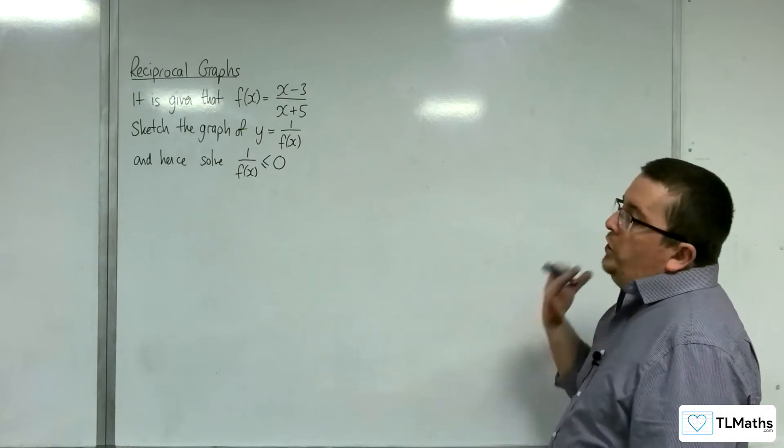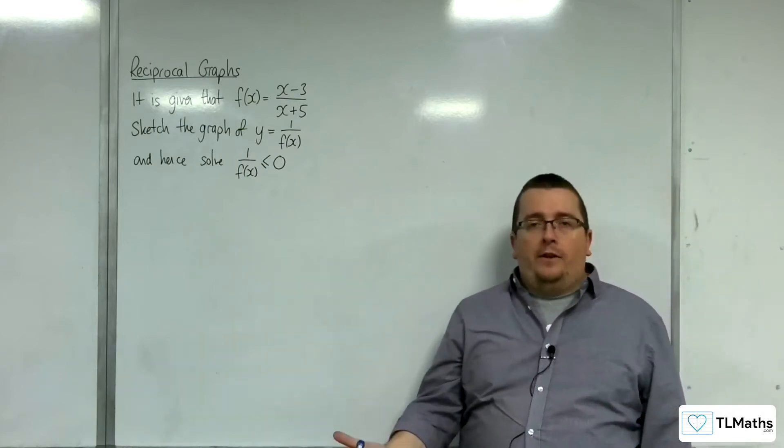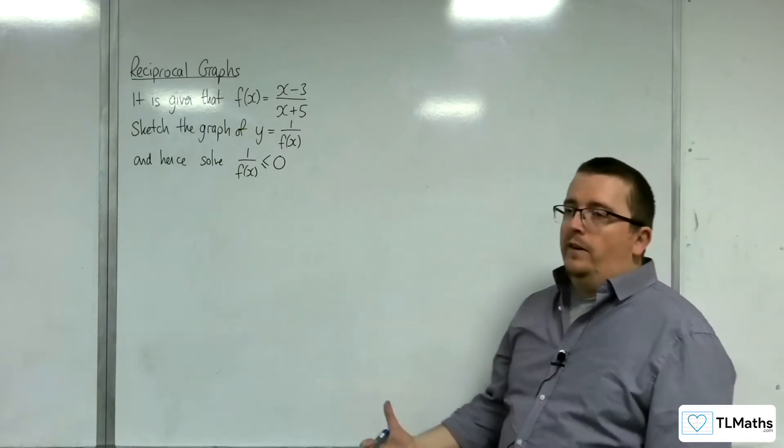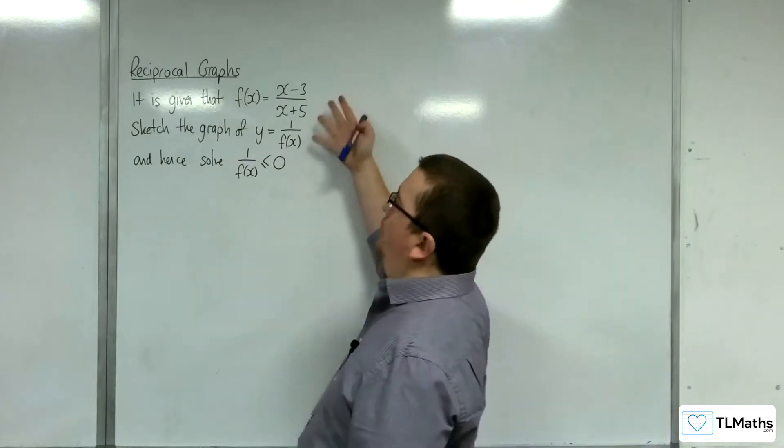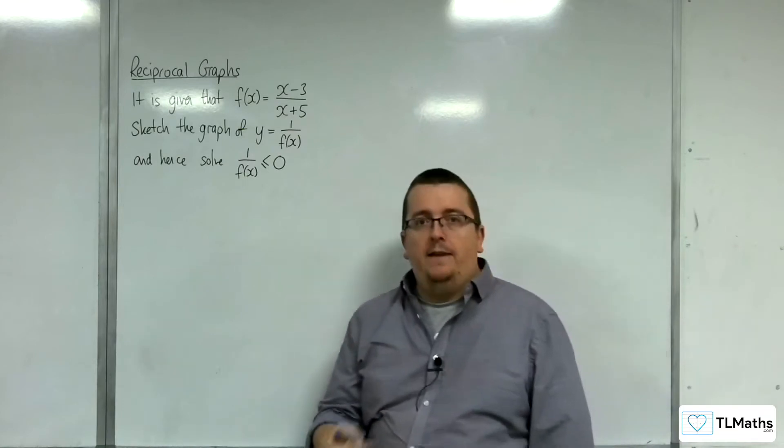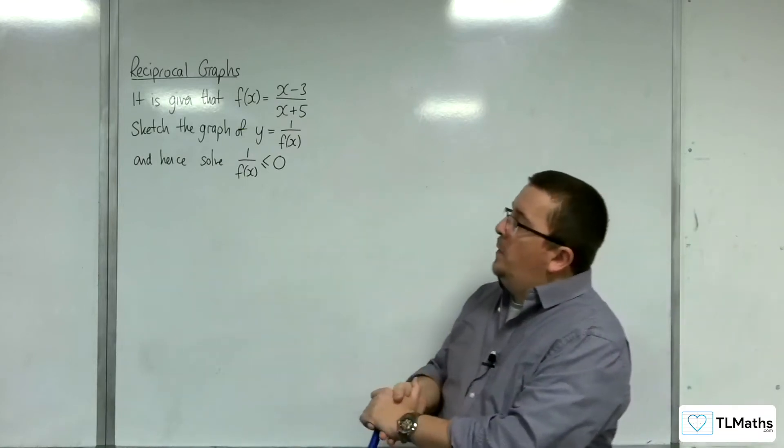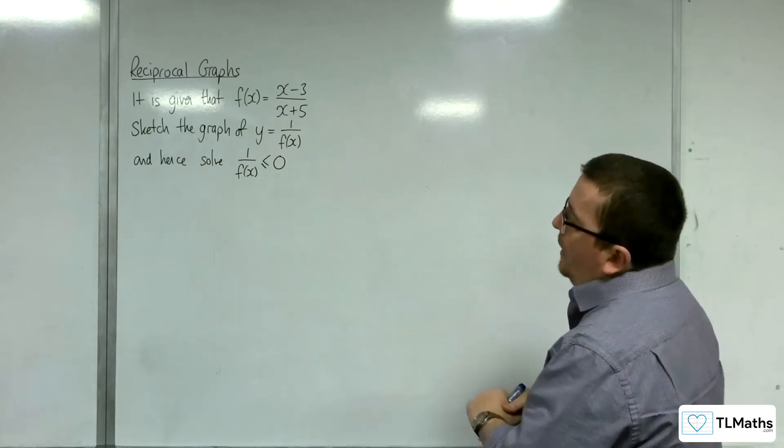Now, what you could do, but I probably wouldn't advise it, is to go exactly along the lines that we have been doing, sketch the original function, and then do the reciprocal graph. Using the information that we've gathered, and the way that we've developed that through the previous videos.